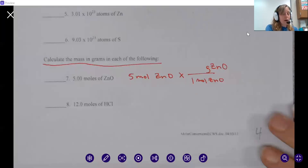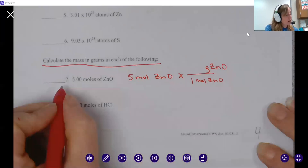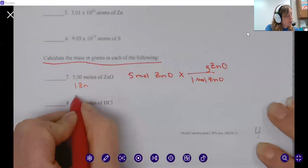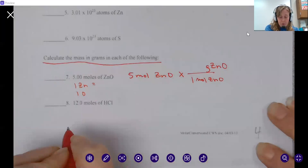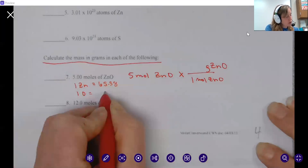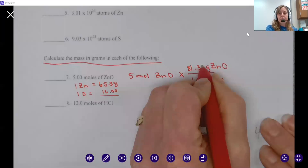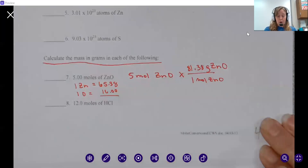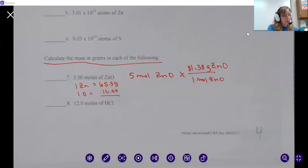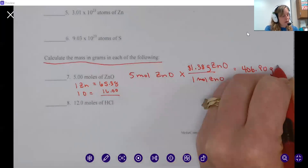Remember, we're not dealing with a single element here. We're dealing with a compound, so we have to add these two together. I've got one zinc and one oxygen. One zinc equals 65.38 and one oxygen is 16. I add 65.38 plus 16, which gives me a mass of 81.38. Now we take that and multiply by five, which gives me 406.90 grams of zinc oxide.